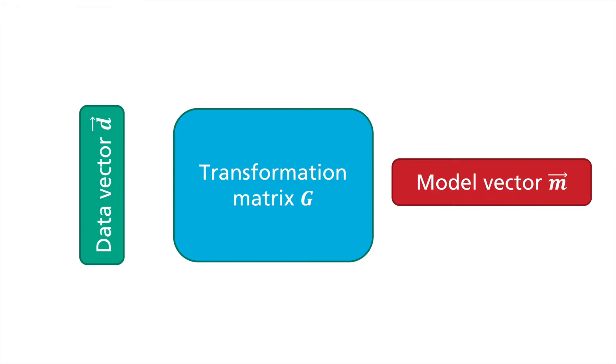The measurement data needs to be consolidated in the data vector D and the underground properties in the model vector M. Often, the underground model is divided into blocks for this purpose. Each entry in the model vector then corresponds exactly to one block. Both vectors are linked to each other via the transformation matrix G. The latter has exactly as many rows as the length of D and as many columns as the length of M.